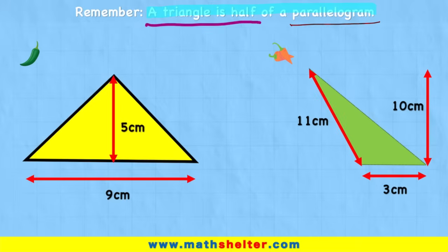So using what we now know, that the area will be base times height divided by 2, let's try and work out the area of this triangle. So in this case, the base is 9 and the height is 5.